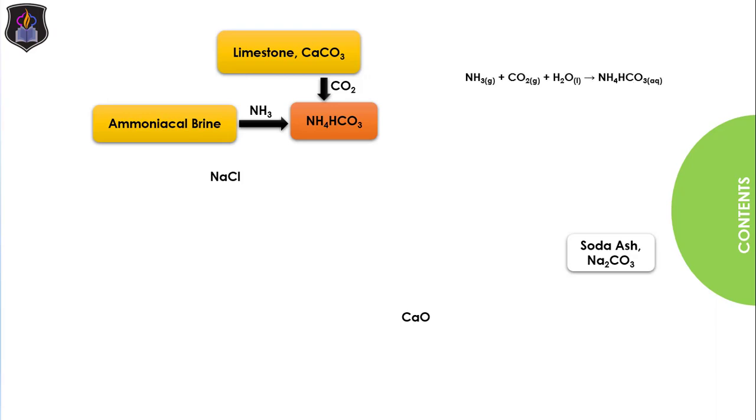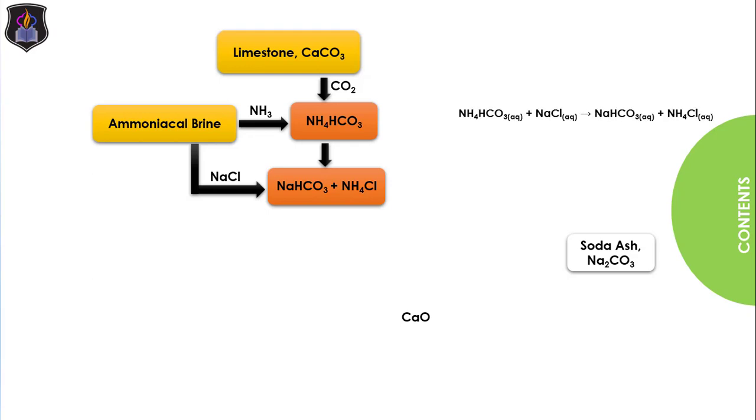The ammonium hydrogen trioxocarbonate (IV) then reacts with the sodium chloride to yield sodium hydrogen trioxocarbonate (IV) and ammonium chloride as shown in the equation. The sodium hydrogen trioxocarbonate (IV) being slightly soluble precipitates out.